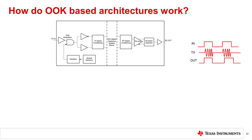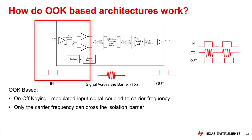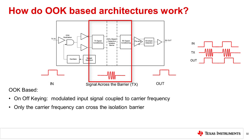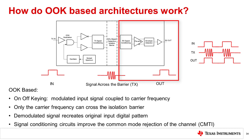How do on-off keying digital isolators work? In the OOK architecture, the incoming digital bitstream is modulated with an internal spread spectrum oscillator clock with a frequency that operates outside the usable data rate of the device. This clock frequency generates OOK signaling such that one input state is represented by transmission of a carrier frequency and the other state by no transmission. This modulated signal is coupled to the isolation barrier and appears in attenuated form on the receive side, which consists of a preamp to gain up the incoming signal followed by an envelope detector. This serves as a demodulator to regenerate the original digital pattern. The transmit and receive signal conditioning circuits improve the common mode rejection of the channel, resulting in better common mode transient immunity, or CMTI.